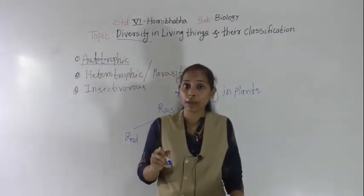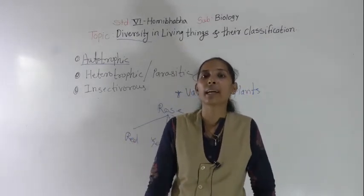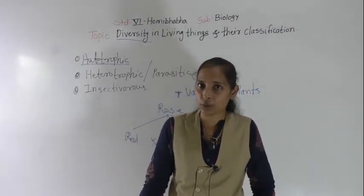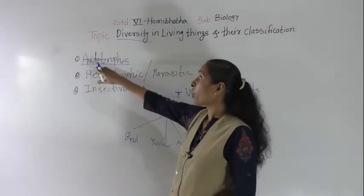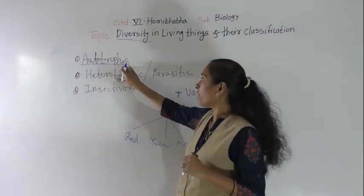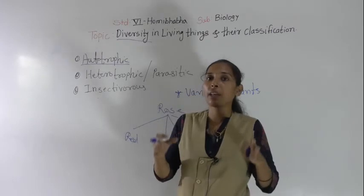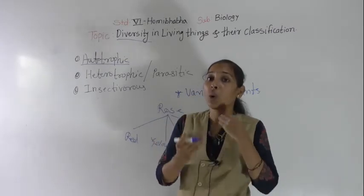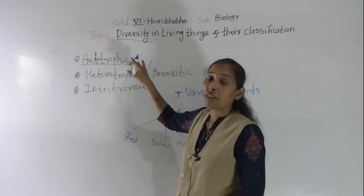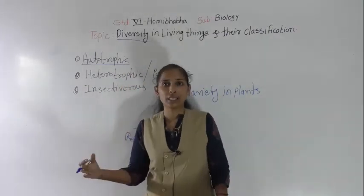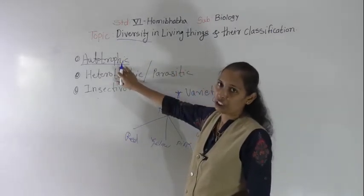First we will see autotrophic plants. The plants which make their own food with the help of the photosynthesis process are called autotrophic. Auto means self and trophic means nutrition — they are having their nutrition by their own. Mostly all the green plants come under this autotrophic nutrition.